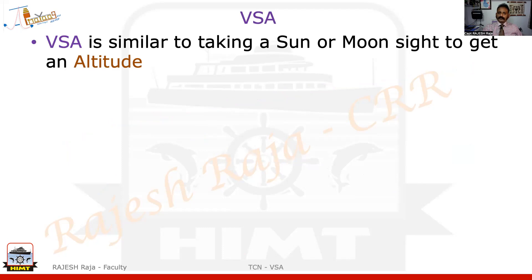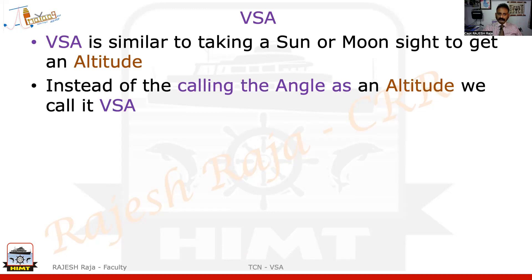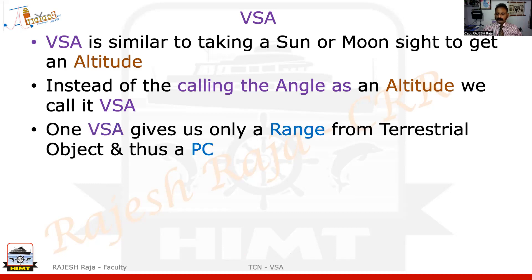VSA is very similar to using your sextant to take a celestial sight — sun or any other celestial object. Whenever you used your sextant, you will have encountered the term altitude, which is measured from your horizon to the object. In the VSA principle, the same angle — previously called altitude — I now call vertical sextant angle to differentiate, because in altitude I use a celestial object, whereas in VSA I use a terrestrial object. Once I measure the VSA, I use a formula to get the range from that terrestrial object, which is a position circle.